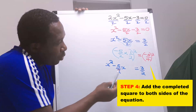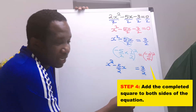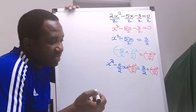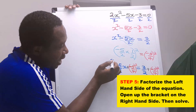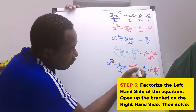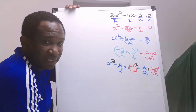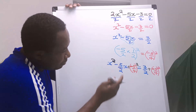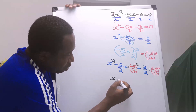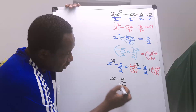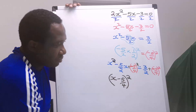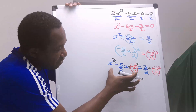Next, we are going to add this completed square to both sides of the equation. x is squared here, and minus 5 over 4 also has a square. I will bring this x out with the square, and the minus 5 over 4 also has a square. I will put both of them together and square it. We have factorized everything we have here.